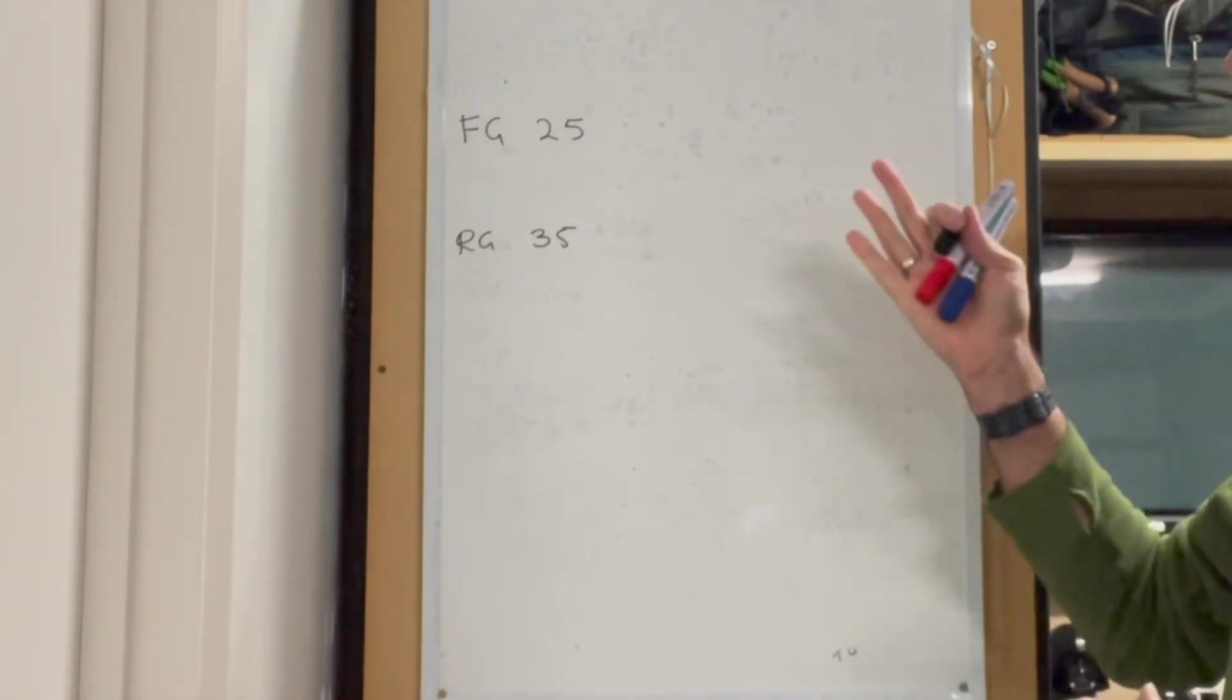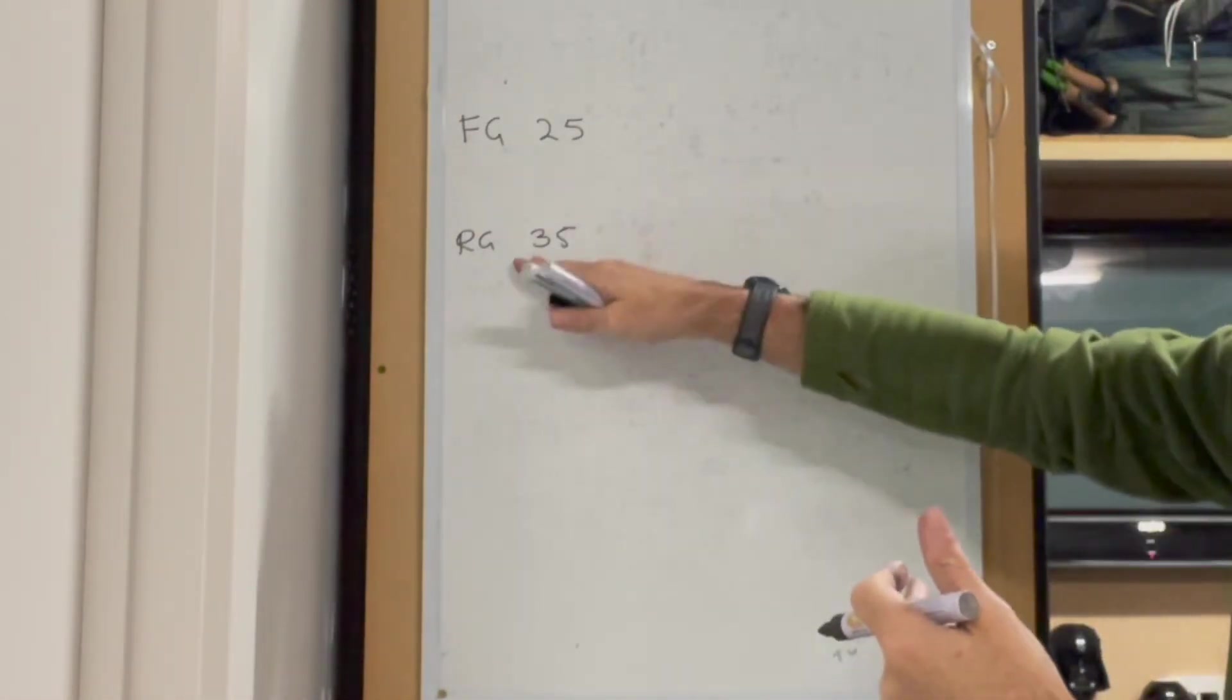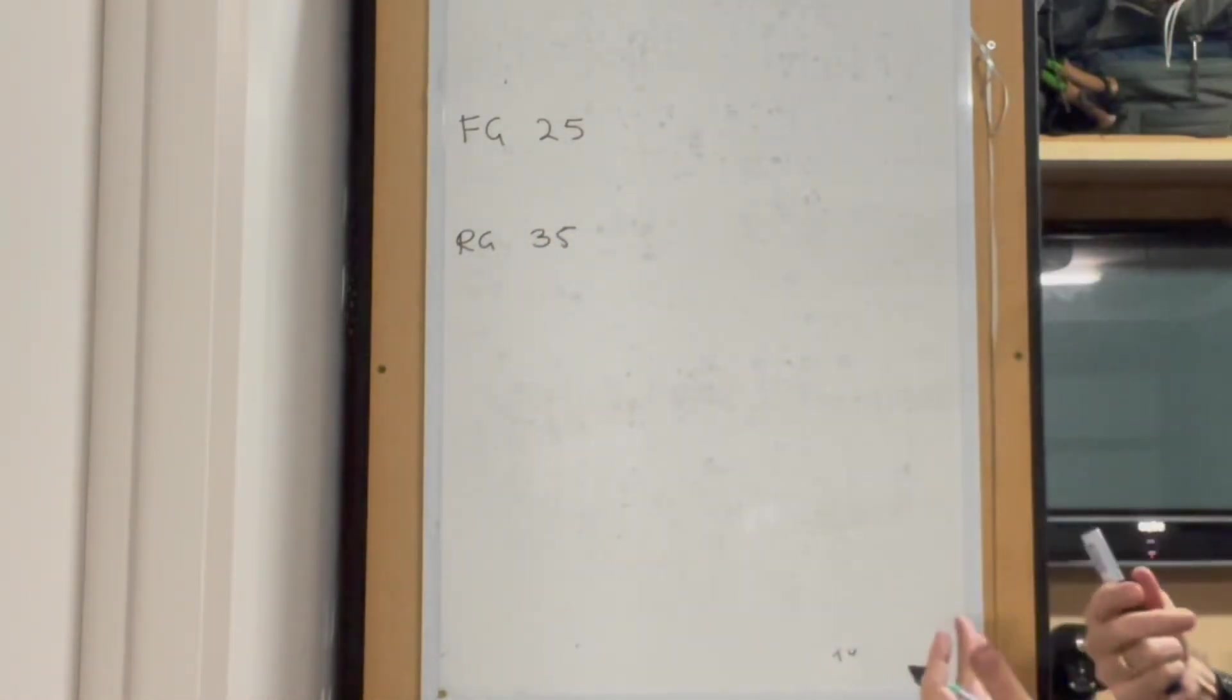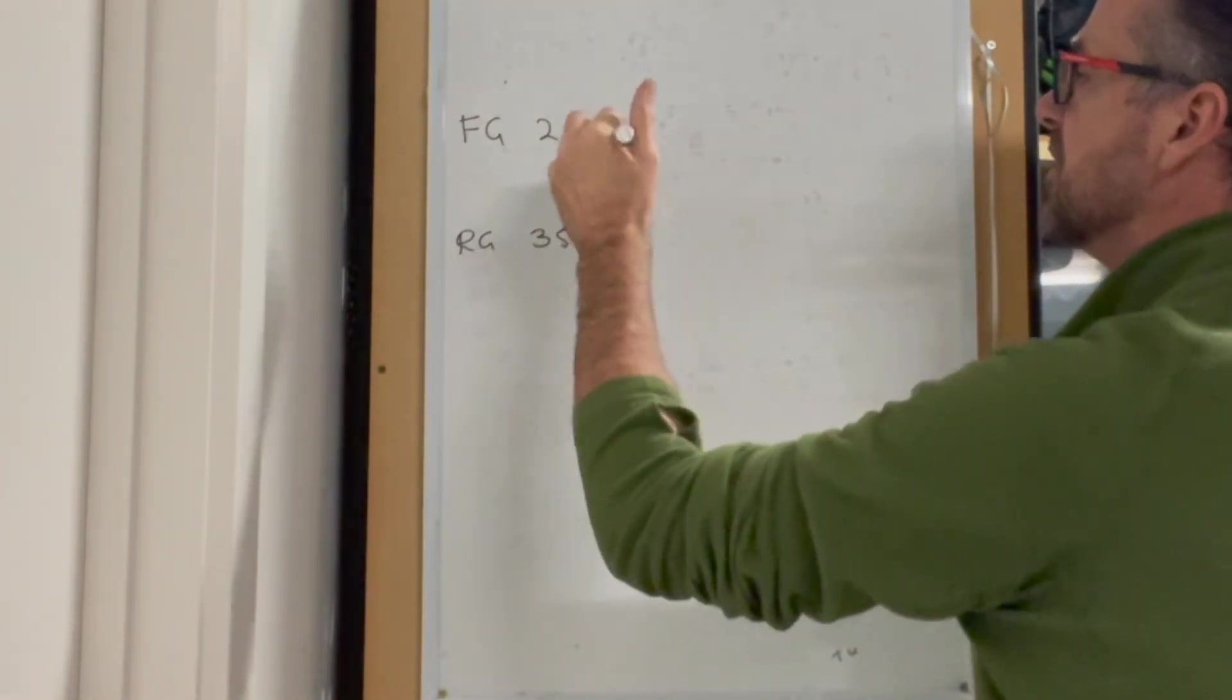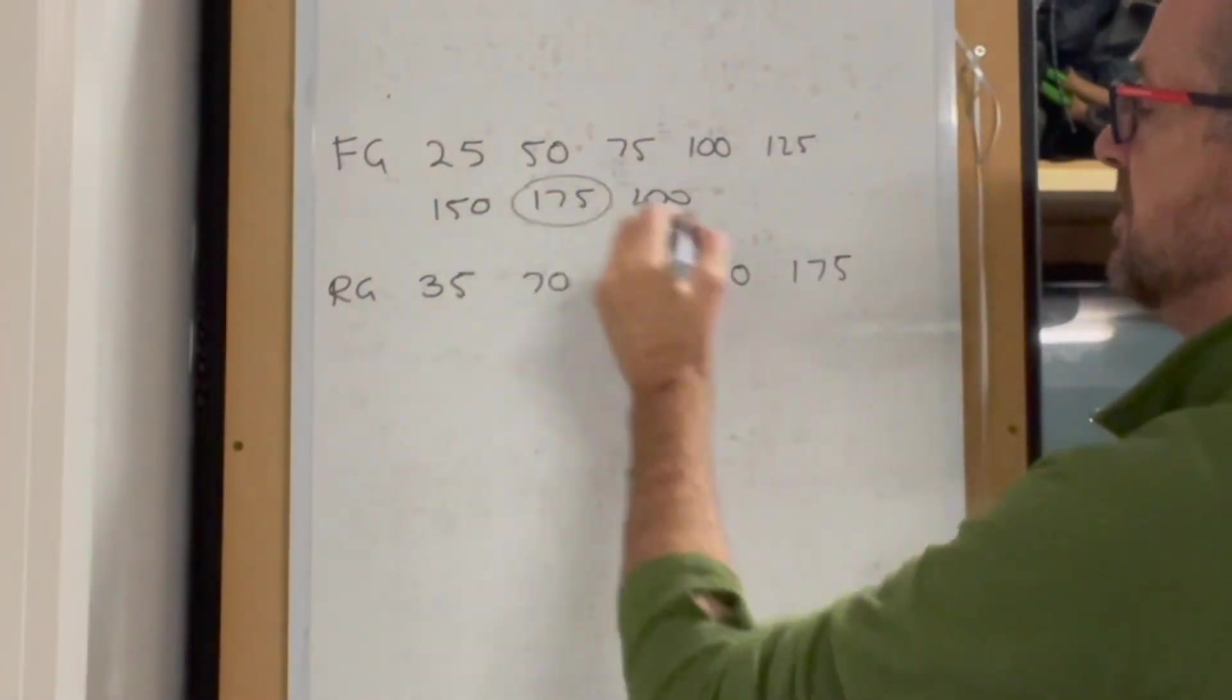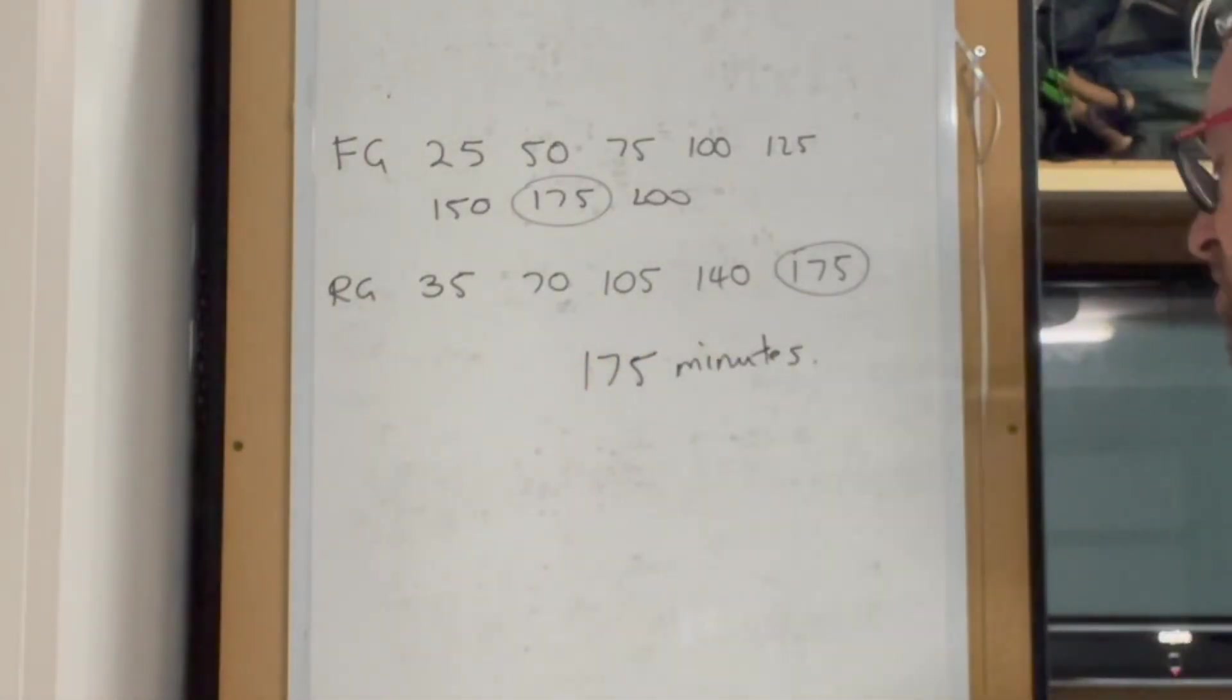Feeding gates open every 25 minutes, and riding gates open every 35 minutes. Assume they both open at the same time initially. When will they next both open together? We need multiples of these. Listing them out: we can see 175 and 175. So 175 minutes after they initially open, they both open again at the same time.